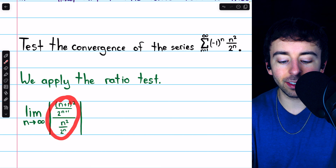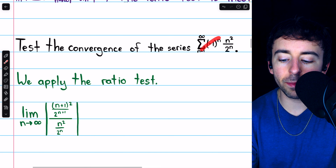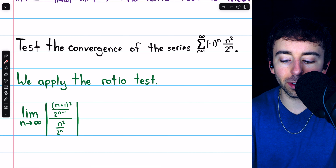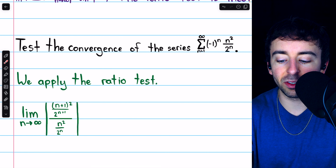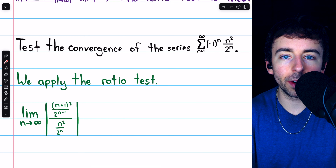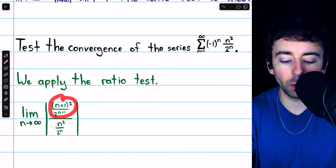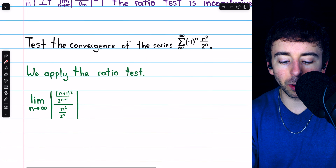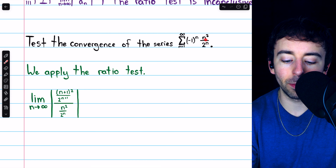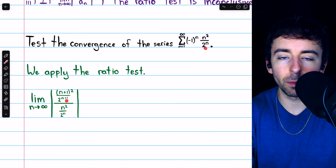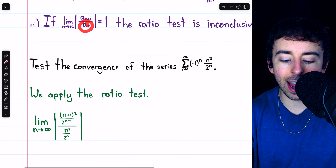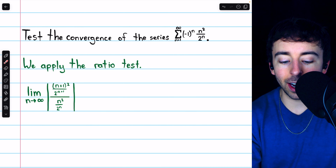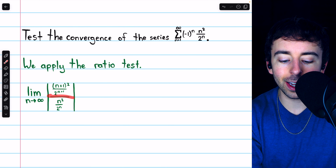That ratio looks like this. Because it's inside absolute value bars, we completely disregard the (-1)^n — it's not going to matter. Then we take the rest of the series, n² over 2^n, and plug in n+1 to get the (n+1)-th term, which is what we see in the numerator. Remember, it should be a_(n+1) divided by a_n, so in the numerator we have (n+1)² divided by 2^(n+1), and in the denominator we have n² over 2^n. This is the ratio of consecutive terms of the series.